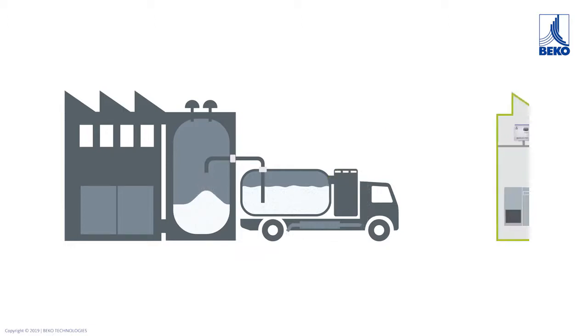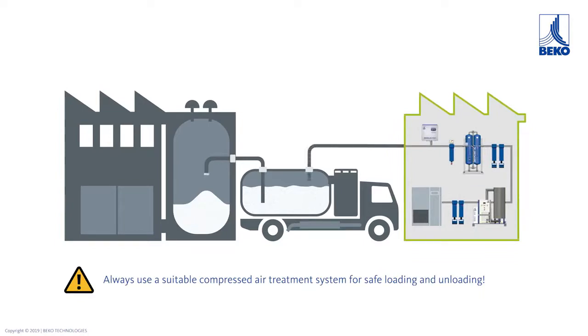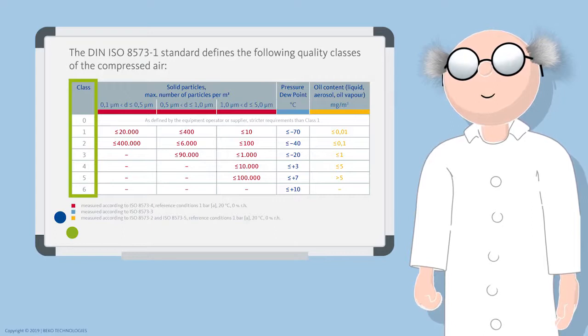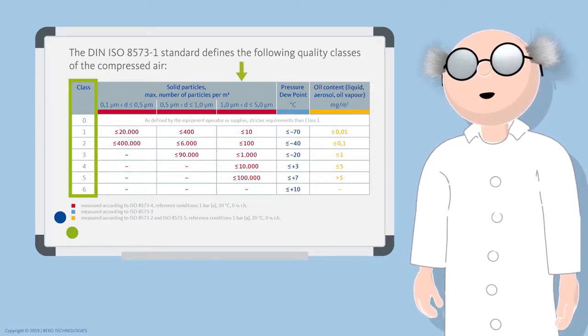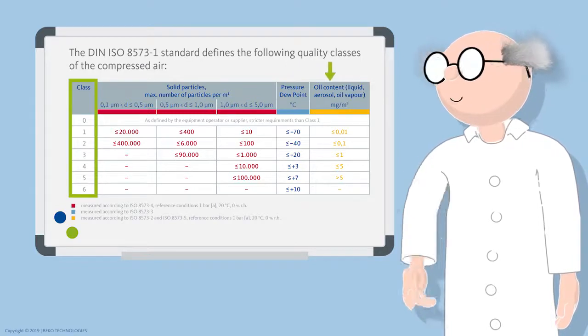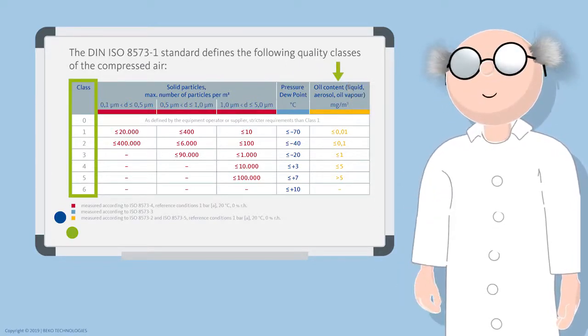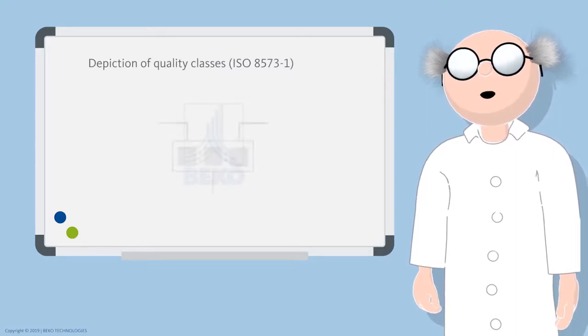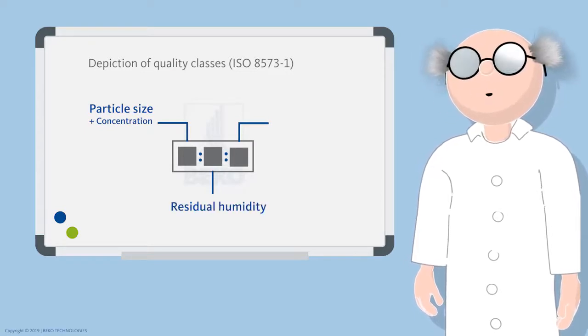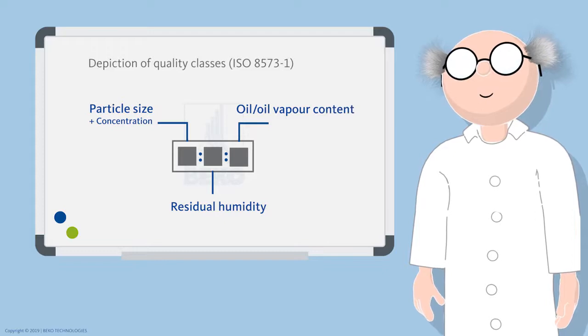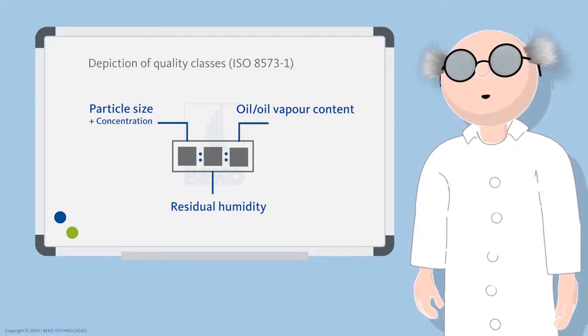A suitable compressed air treatment system must always be used for safe loading and unloading. The standard ISO 8573, for example, stands for the quality requirements for compressed air and specifies the maximum content of solid particles, air humidity, and residual oil or oil vapor that may be contained in the respective classes. The quality classes for compressed air are indicated by three digits: the first digit stands for the particle size, the second for the residual humidity, and the third digit for the oil or oil vapor content of the compressed air.